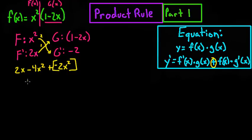When you simplify that, you get 2x minus 6x squared. And that is the derivative of this function.